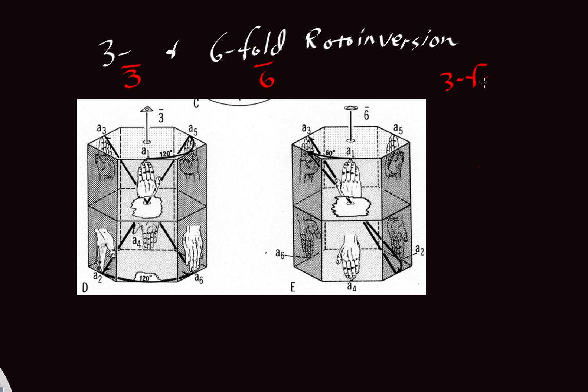So for a 3-fold rotational axis, we would have a 120-degree rotation. In this case, we're not going to stop there. We're going to add an inversion after the rotation. And then for the 6-fold, we have a 60-degree rotation.